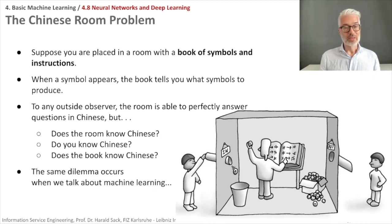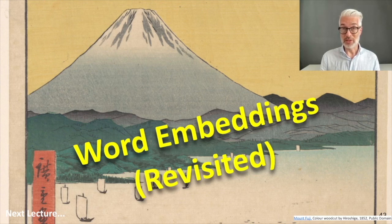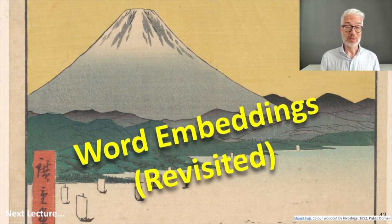At this point we stop with the general introduction to neural networks. However, we have two more applications to discuss. In the next section of the lecture, we revisit word embeddings and distributional semantics, and you will see how word embeddings really work.